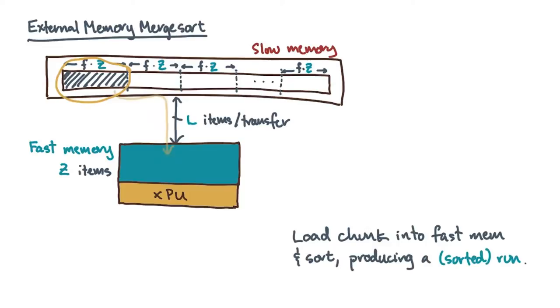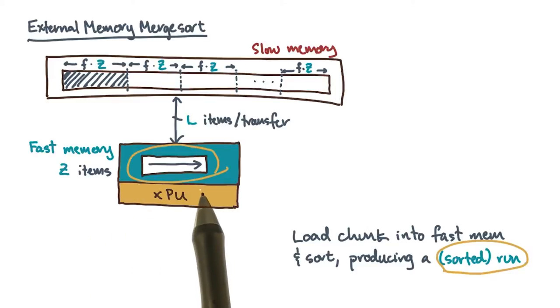Next, read a chunk of the input from slow memory into fast memory. Then sort this chunk. I'll refer to this sorted output sitting in fast memory as a sorted run, or just run for short.